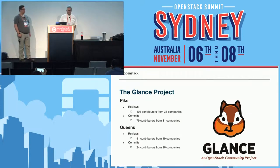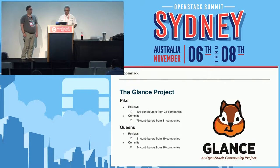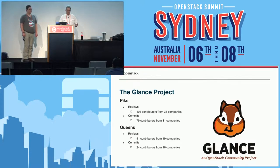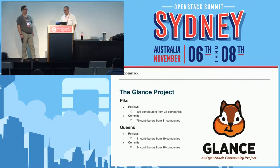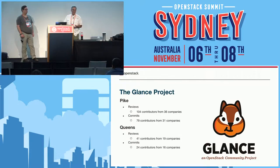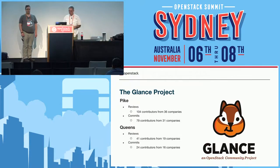As far as Glance as a project goes, in Pike there were about 104 contributors from 36 companies for reviews, and 79 contributors from 31 companies for commits. We're just into the Queens development cycle so the numbers are smaller. I want to mention that a lot of contributions are just one or two line changes for documentation or typos. Pretty much all the substantive commits are coming from Verizon, Red Hat, and NTT Data. Glance is really overly relying on a few companies, so we need more contributors.